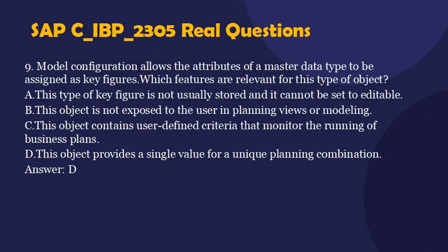Question 9. Model configuration allows the attributes of a master datatype to be assigned as key figures. Which features are relevant for this type of object? A. This type of key figure is not usually stored and it cannot be set to editable. B. This object is not exposed to the user in planning views or modeling. C. This object contains user-defined criteria that monitor the running of business plans. D. This object provides a single value for a unique planning combination. Answer: D.